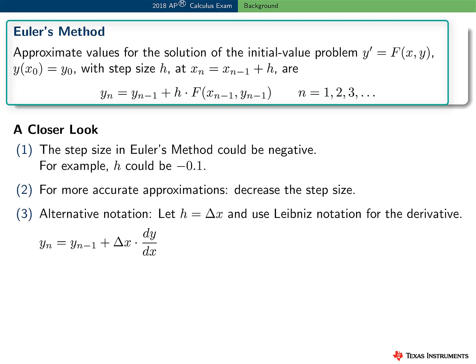Here is a formal statement of Euler's method. In summary, we can find approximate values for the solution to this initial value problem with step size h by using this formula that we have just developed. And here's a closer look at this method.